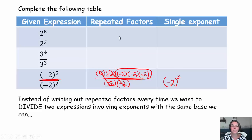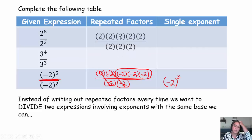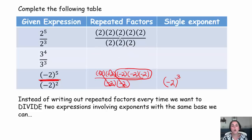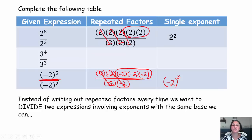Hopefully you completed those first two rows. So the first row: if we write two to the fifth using repeated factors, we write two out five times. If we write two to the third using repeated factors, we write two times two times two. We always keep our fraction bar. Now we just simplify — two divided by two is one, three times. We see that we have two factors of two left, which is why as a single exponent it becomes two to the second power.